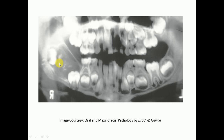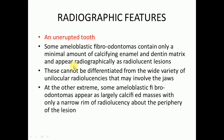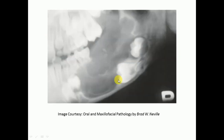The calcified material within the lesions may appear as multiple small radio-opacities or as solid conglomerate masses. They are mostly associated with an unerupted tooth. Some ameloblastic fibroodontomas contain only a minimal amount of calcified enamel and dentine matrix.